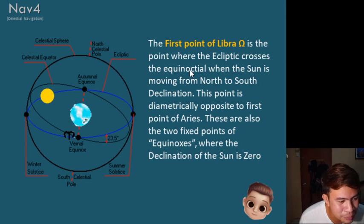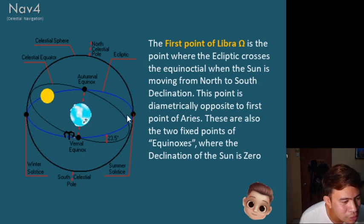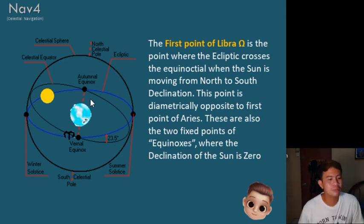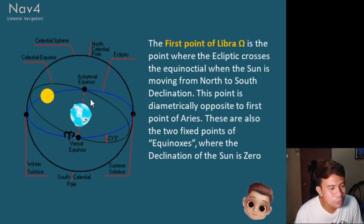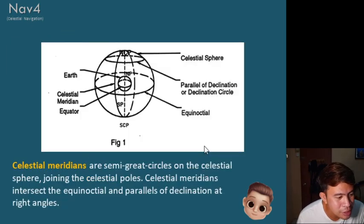The first point of Libra is when the sun is moving from north to south, diametrically opposite the first point of Aries. These are the two fixed points of the equinoxes being discussed here. At these points, the declination of the sun is zero.